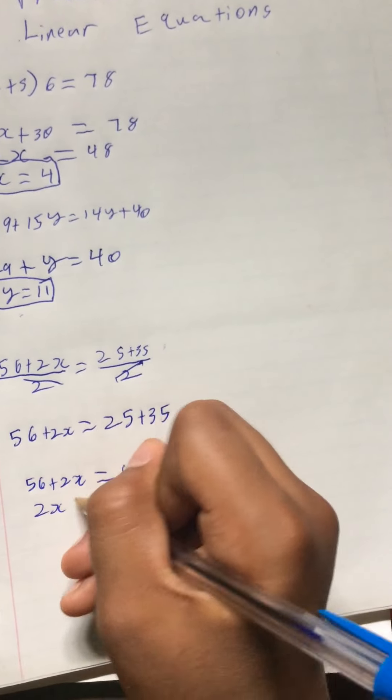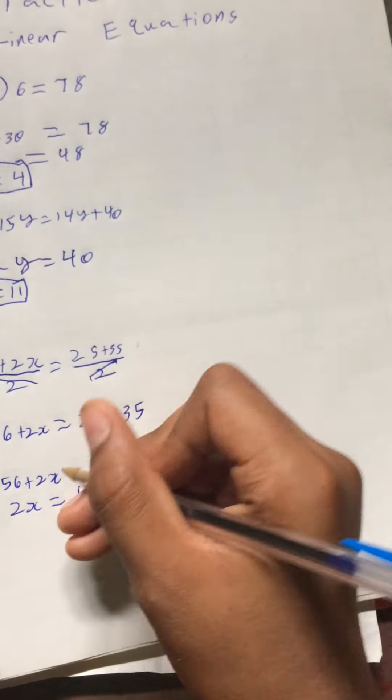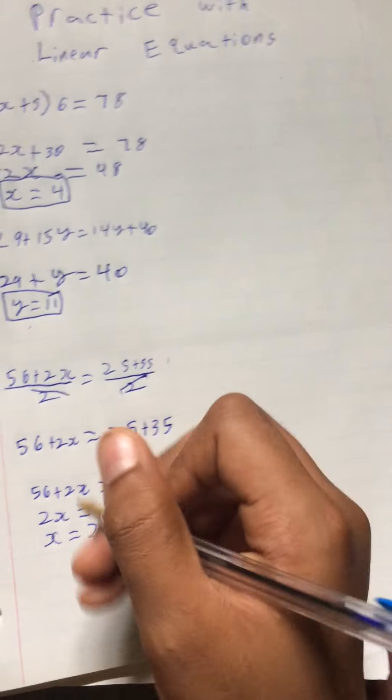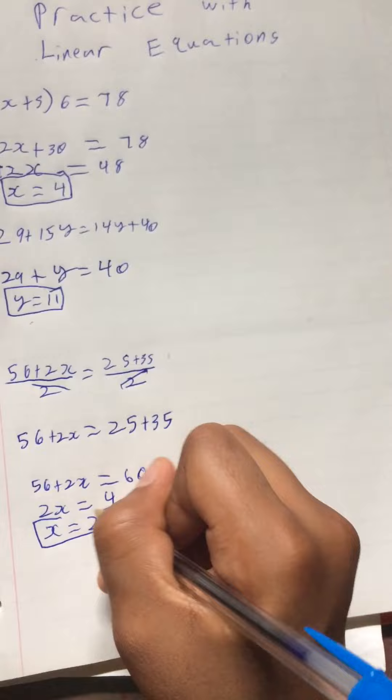Then 2x would equal 4. So 60 minus 56 is 4. And then x equals 2. Boxing that.